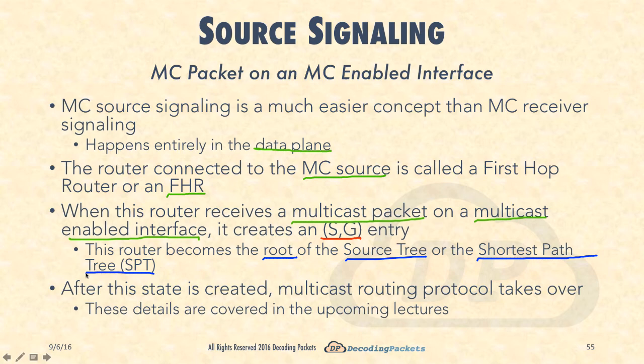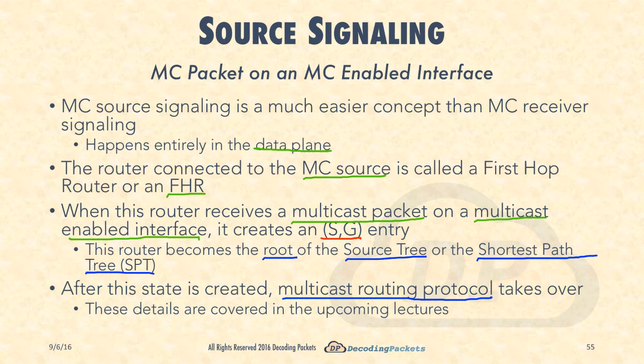Once the state is created — created by the first hop router on reception of the multicast packet — there's nothing more for it to do. The multicast routing protocol must now take over, and those are the actual details we are going to cover in our upcoming lectures.